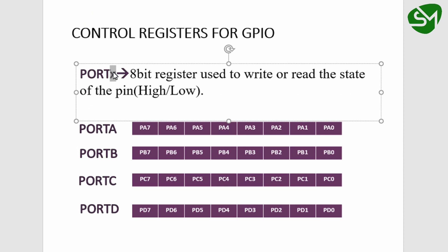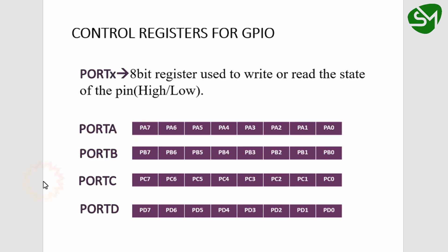The X is indicating that this is not a constant and the value of X is varying depending on the ports. That is port A, port B, port C, and port D — we are having four different port registers: port A, port B, port C, and port D.